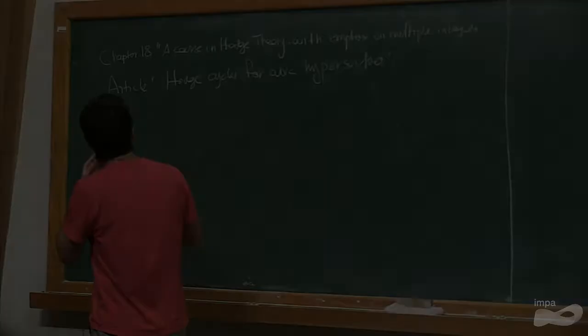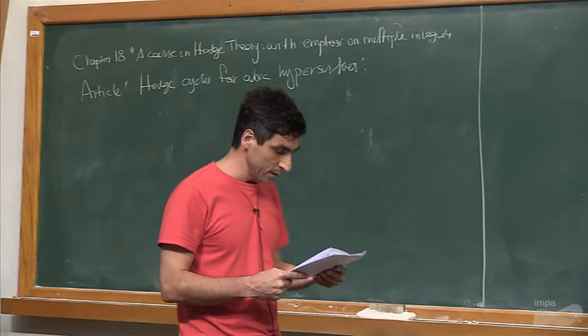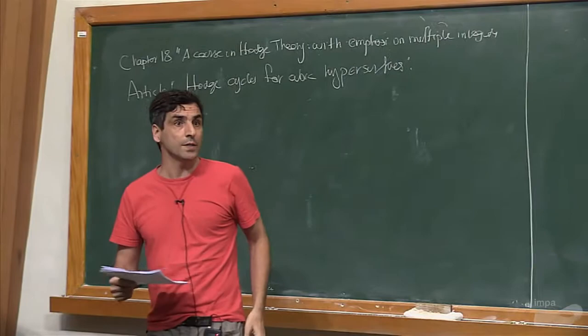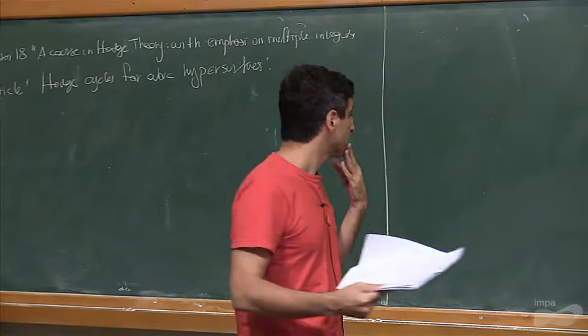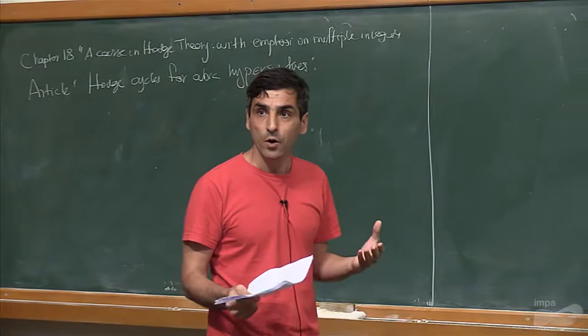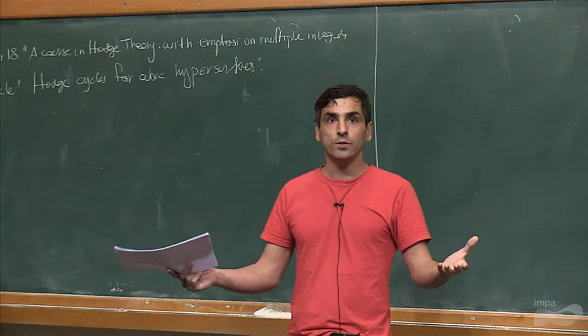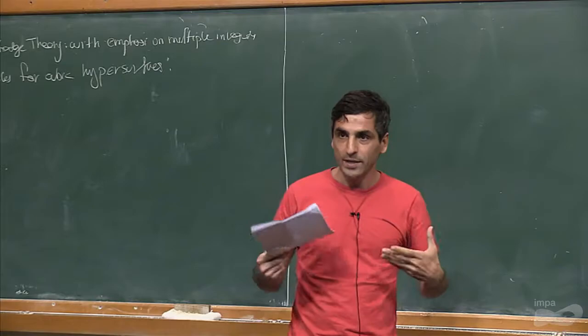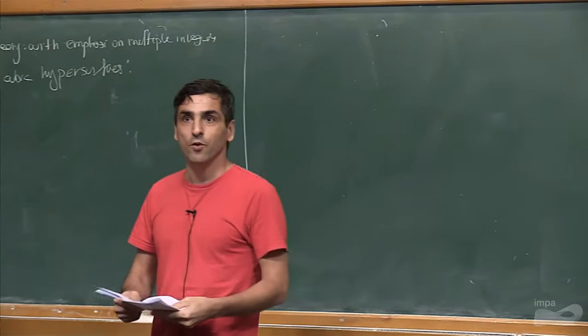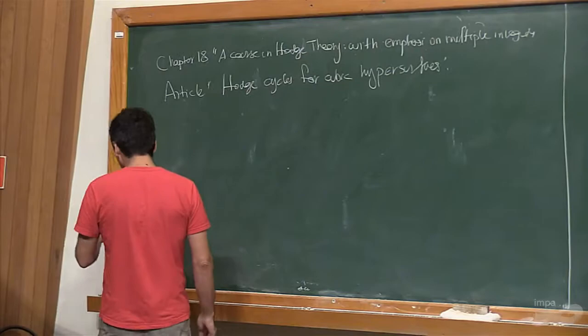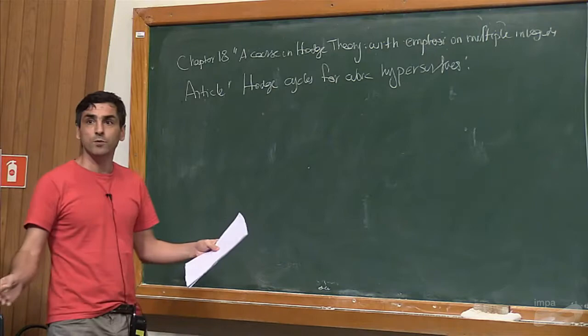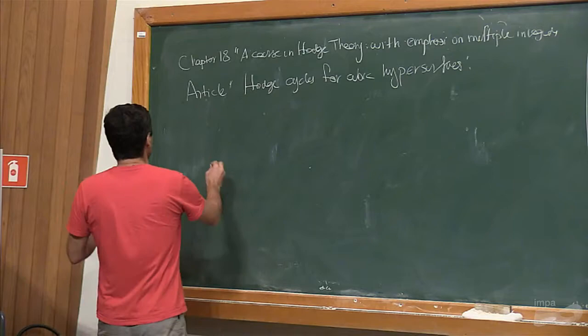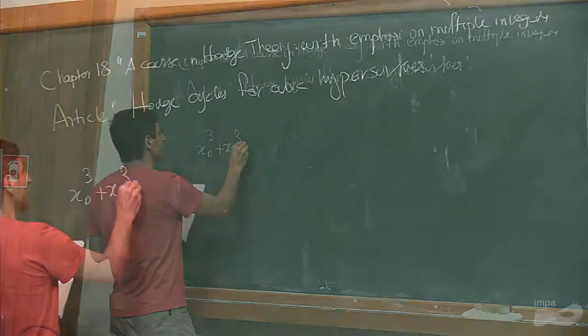I will talk about chapter 18 of my book and also this article which is already in the archive. The story started some five years ago — the idea was to discover new Hodge cycles. The result says that you don't find a new Hodge cycle; any Hodge cycle you find is expected to be supported in the algebraic deformation of your original algebraic cycle. I will restrict myself to cubic hypersurfaces for purely computational reasons.